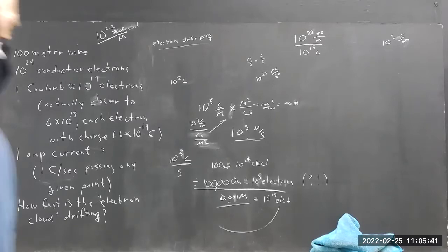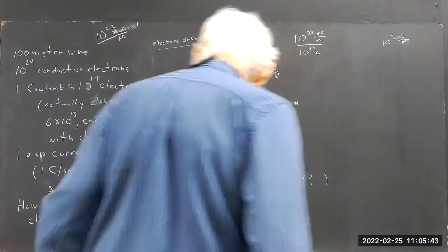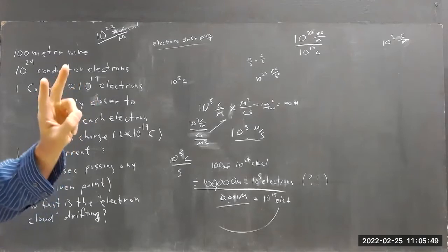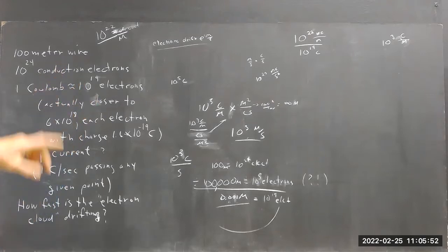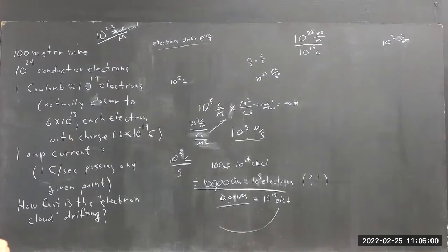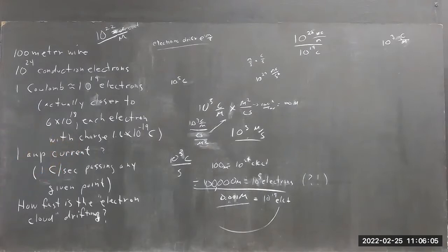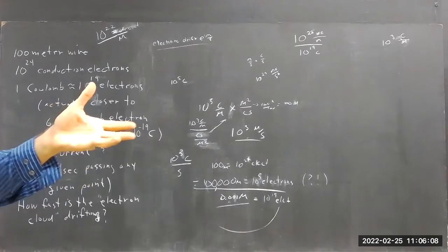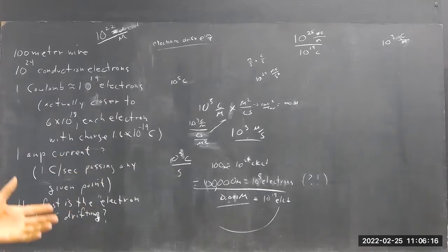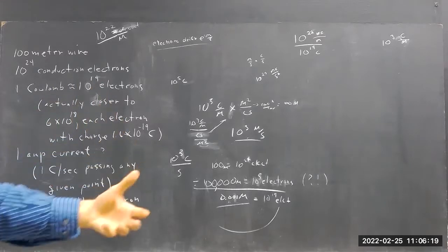Okay, so the question is: 100 meters of copper wire, figure two conduction electrons per atom. 100 meters of wire is a ballpark of about a mole of copper — roughly 50-some grams. The coil wire is a little more than that, but we're just rounding things off, a ballpark, to get a feel for how fast electrons drift to give you various currents.